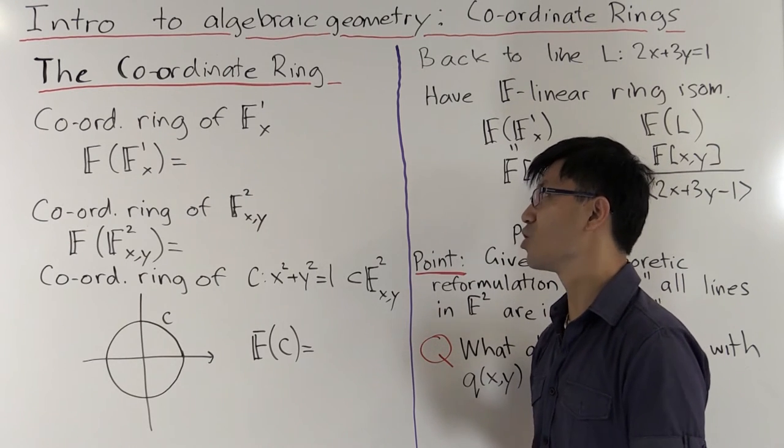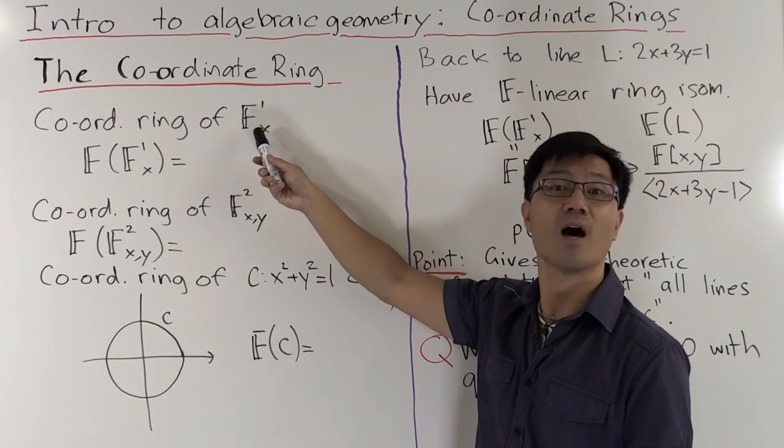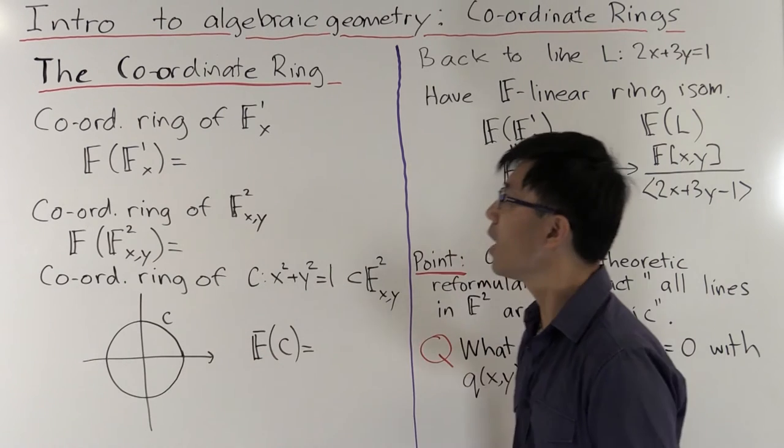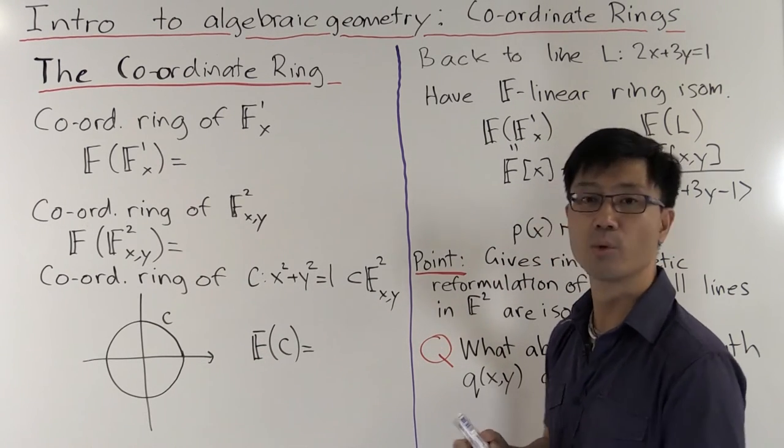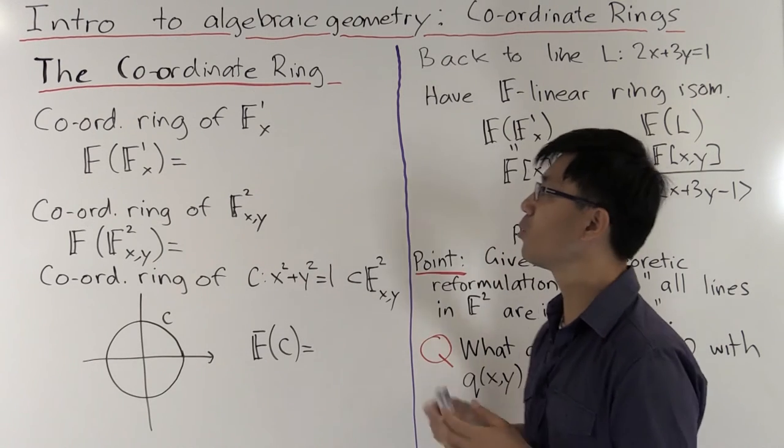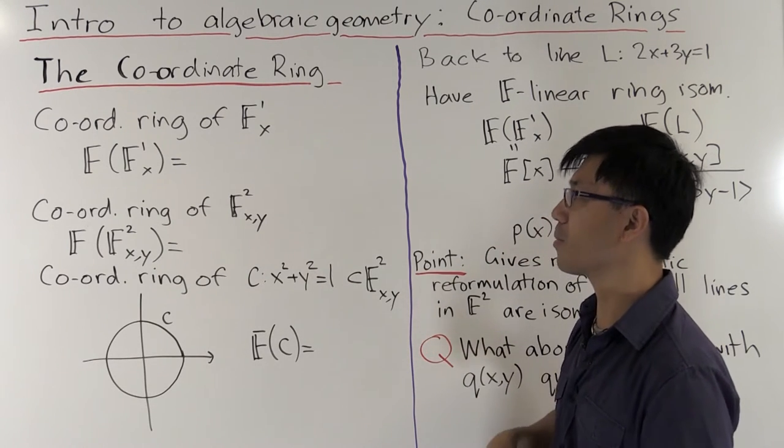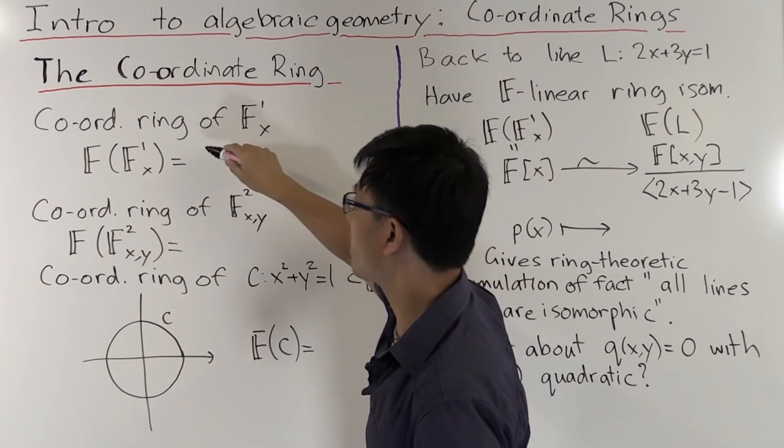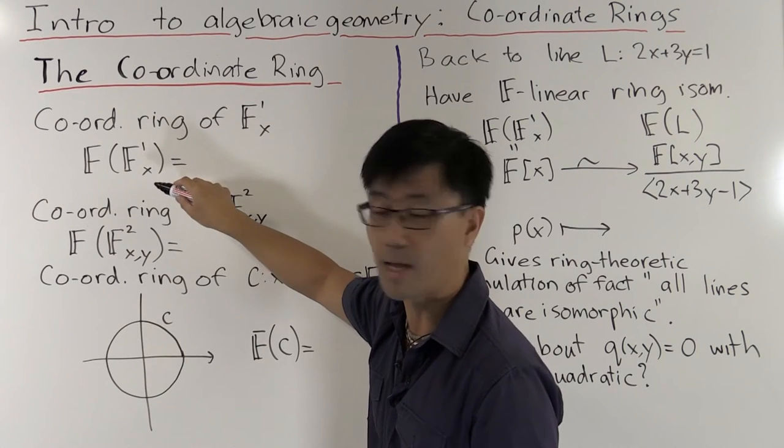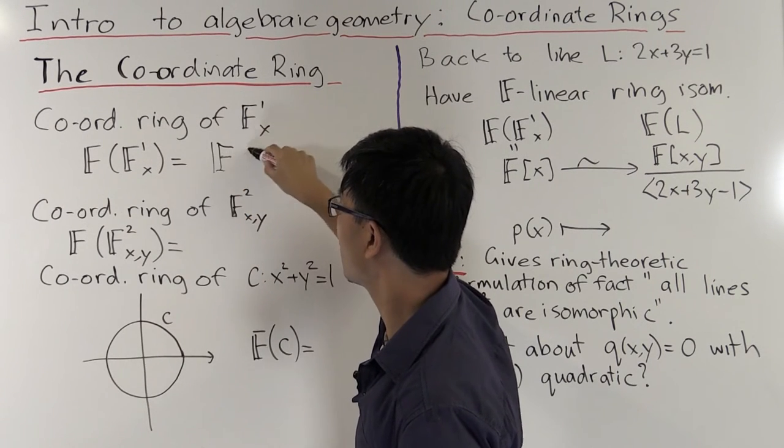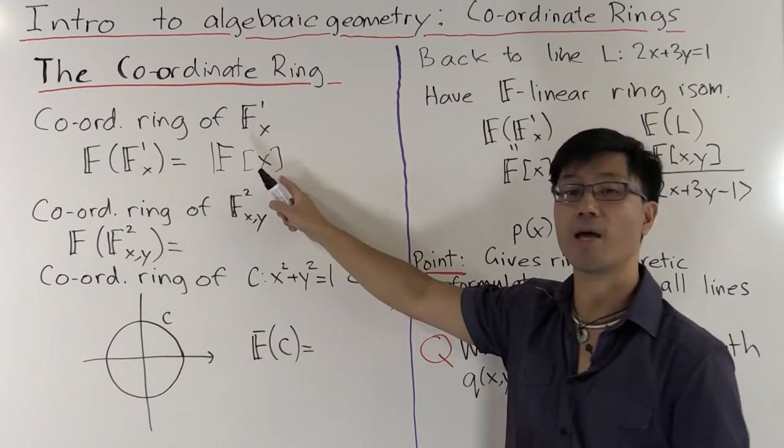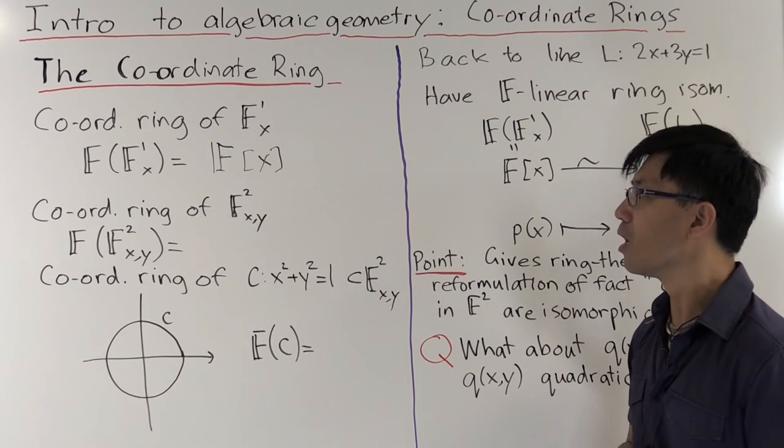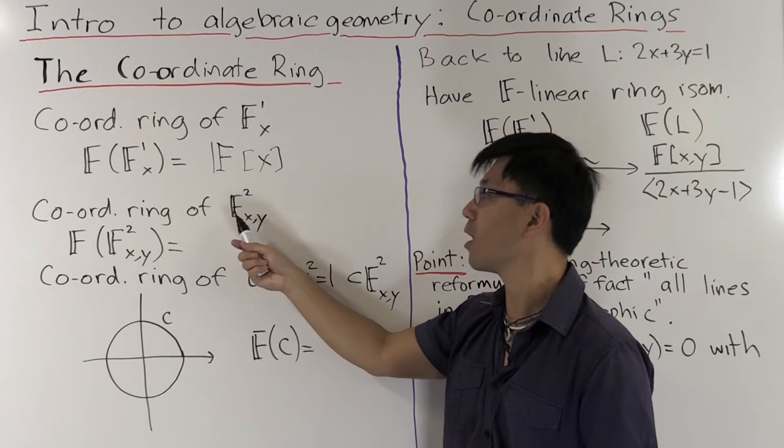So let's just start with some basic examples. That's probably the best way to learn about this concept. And the simplest geometric object is just the affine line F¹ₓ. So you're just looking at a single line. And here we want to look at functions on that. So we're just looking at functions of a single variable. And we want to look at algebraic functions. So it makes sense to define the coordinate ring of this F¹ₓ just to be the polynomials in that single variable x. So that's just polynomials in x with coefficients in our field F. Easy enough.